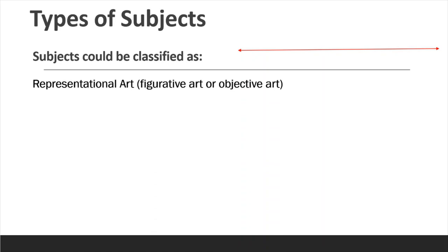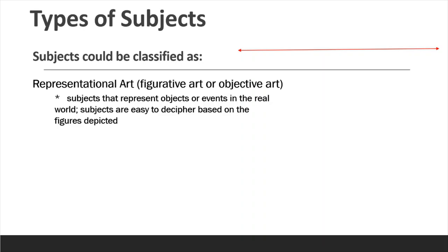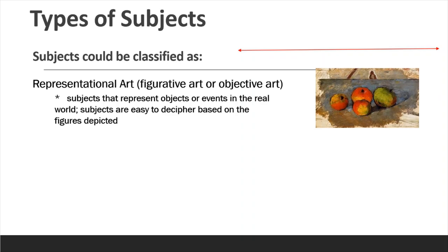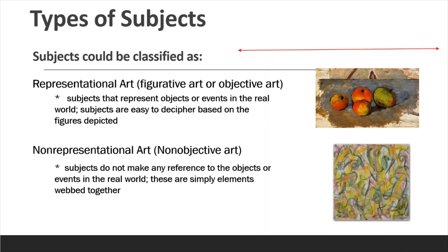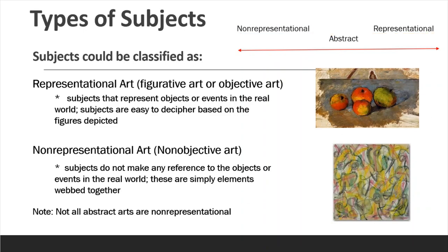Now let's go to the types of subjects. Subjects could be classified under representational art, also called figurative art or objective art — it is a literal representation of real objects. Then there is abstract art, where a viewer cannot readily tell what is being represented by the painting; instead, he can form many interpretations. But not all abstract art is non-representational. Abstract is in between representational and non-representational, meaning abstract art can function as both.